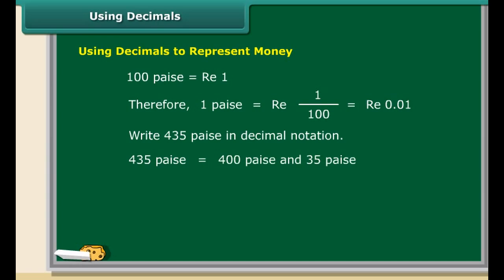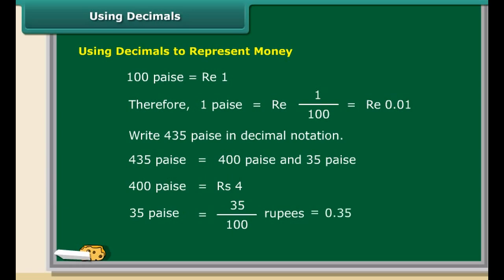Let us now use decimal notation to write 435 paise. 435 paise may be split as 400 paise and 35 paise. 400 paise are equal to rupees 4, and 35 paise are equal to 35 upon 100 rupees, that is 0.35. So 435 paise are equal to rupees 4.35.